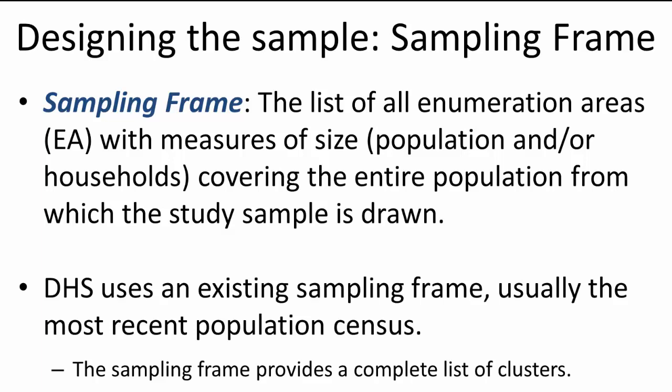In most surveys, the DHS uses an existing sampling frame, which is usually the most recent population census. The 2012 Tajikistan DHS used the population census conducted in 2010. The goal of a sampling frame is to identify 100% of the target population in the country so that every individual has a chance to be selected and interviewed. The sampling frame also provides a complete list of clusters — groups into which the sampling frame is divided, sometimes called primary sampling units or enumeration areas.